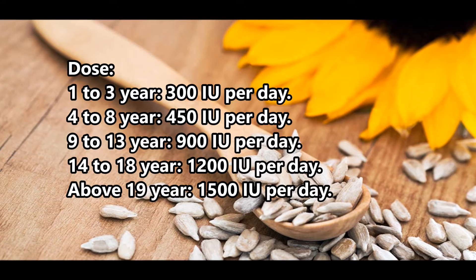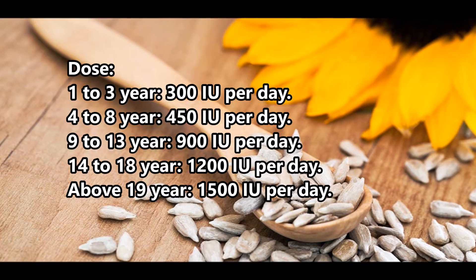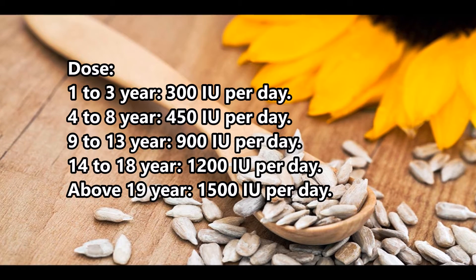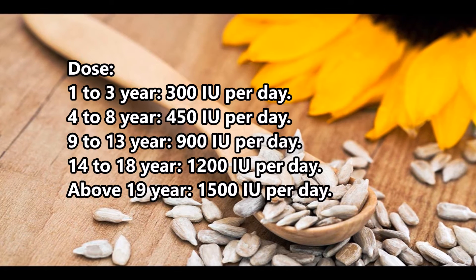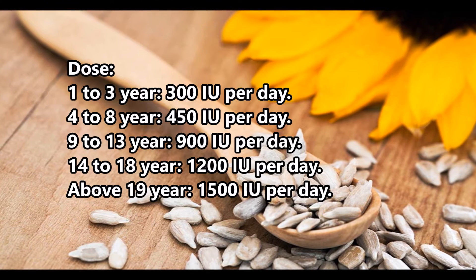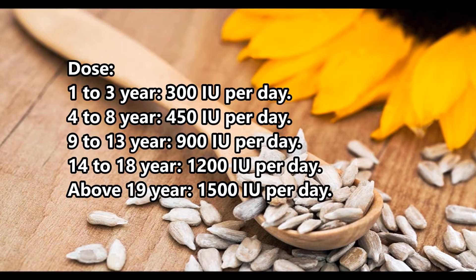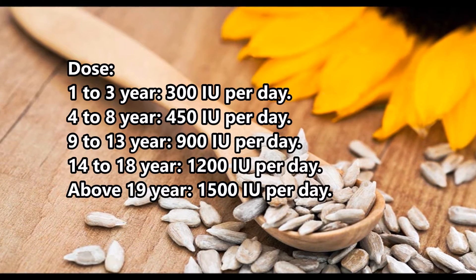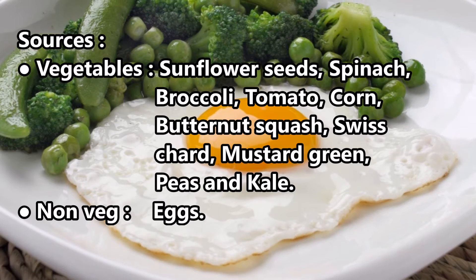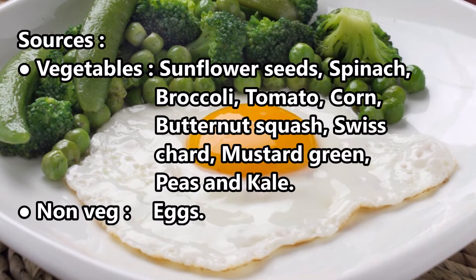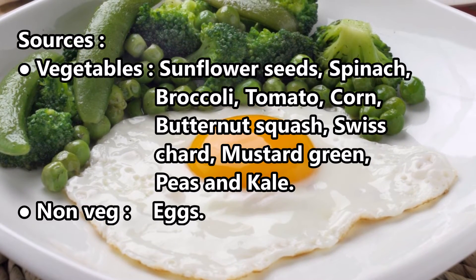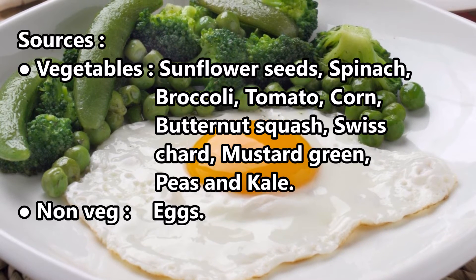Dose: 1 to 3 years — 300 IU per day. 4 to 8 years — 450 IU per day. 9 to 13 years — 900 IU per day. 14 to 18 years — 1200 IU per day. Above 19 years — 1500 IU per day.